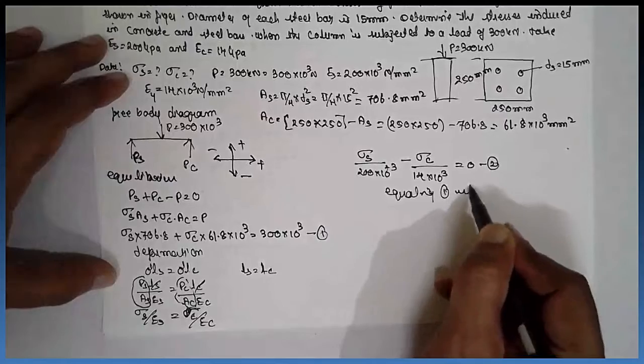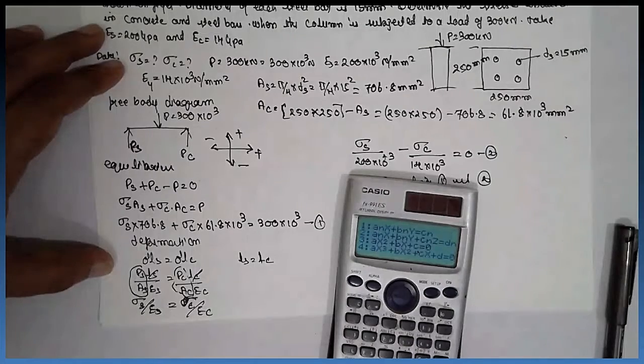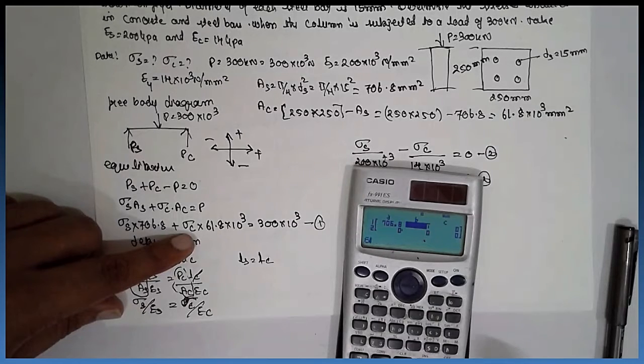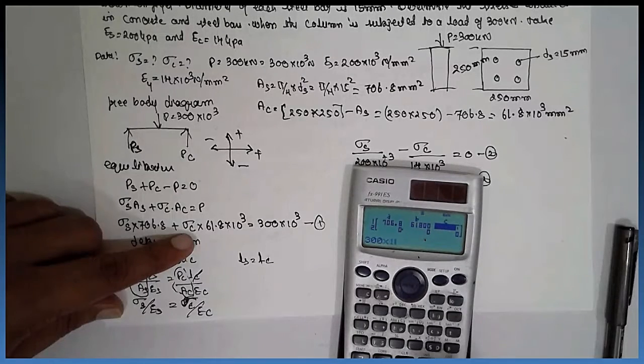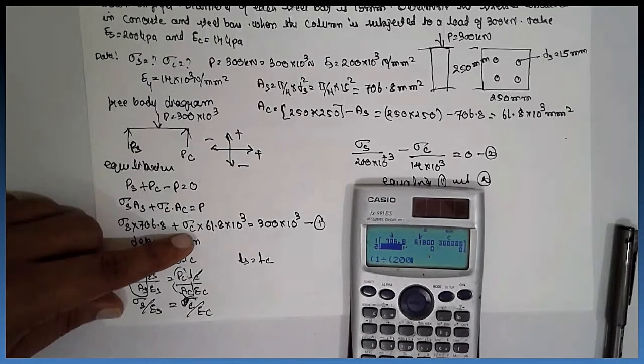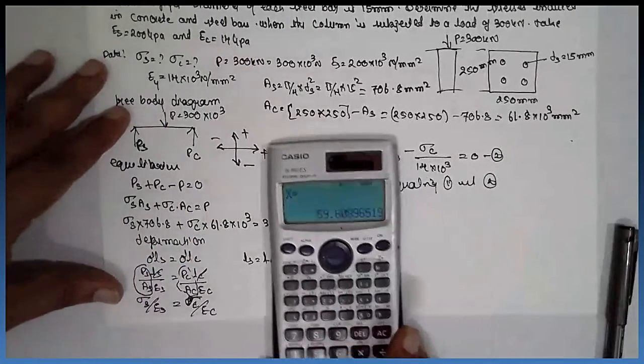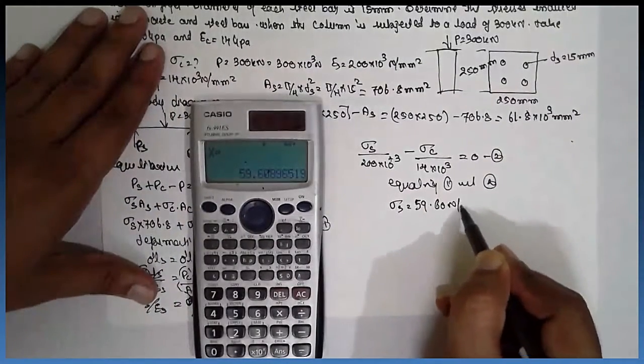Equating equations 1 and 2, we get: 706.8, 61.8 times 10 to the power 3, 300 times 10 to the power 3, 1 divided by 200 times 10 to the power 3 minus 1 divided by 14 times 10 to the power 3 equals zero. The answer is Sigma S equals 59.60 Newton per mm square.